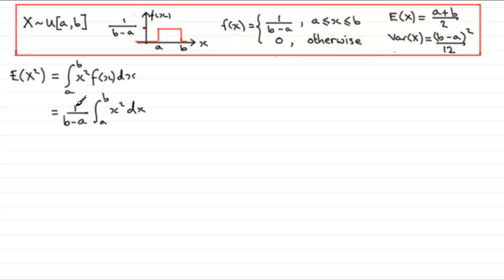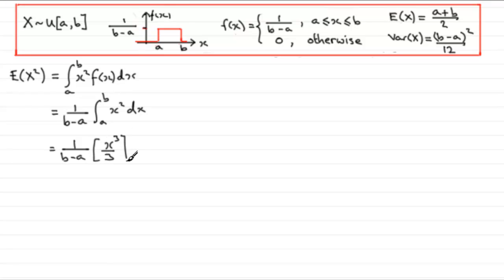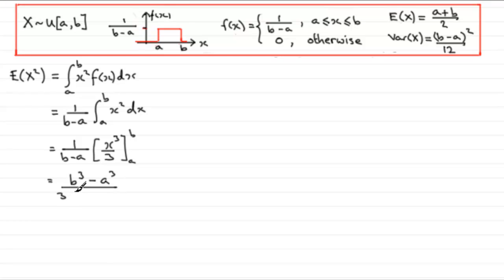I don't have to put the 1 over b minus a out the front, but it does make the integral easier to work with. Integrating gives 1 over b minus a times x cubed over 3, evaluated from a to b. Substituting the limits gives b cubed over 3 minus a cubed over 3, which we can write as b cubed minus a cubed all over 3 times b minus a.